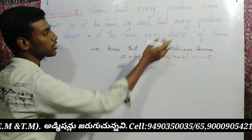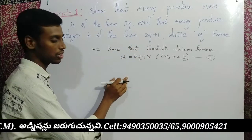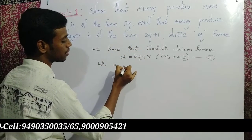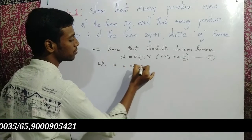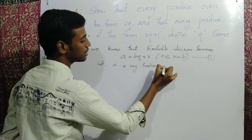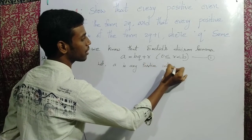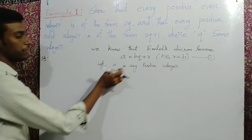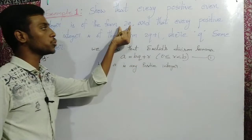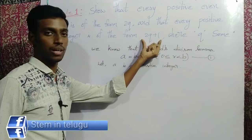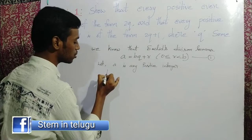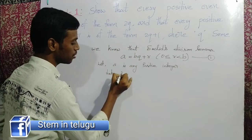Let a be any positive integer. Now, take b is equal to 2. Since b is 2, we can write the possible remainders as 2q and 2q plus 1. Take b equal to 2.